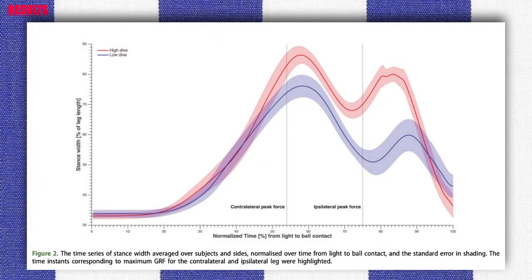Results: Our results showed that the starting position of the goalkeepers was characterized by a stance width of 33±1% of leg length, 62±18 degrees knee flexion, and 63±18 degrees hip flexion.